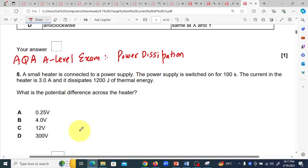Dear students, another question from an A-level exam. This is a question about power dissipation. A small heater is connected to a power supply. The power supply is switched on for 100 seconds. The current in the heater is 3.0 amperes and it dissipates 1200 Joules of thermal energy. What is the potential difference across the heater?